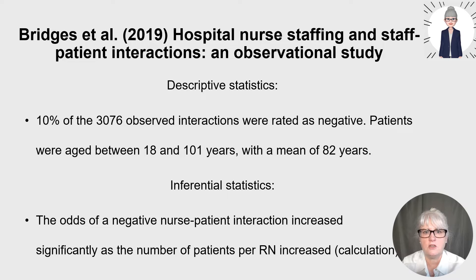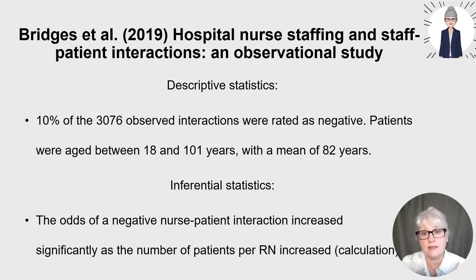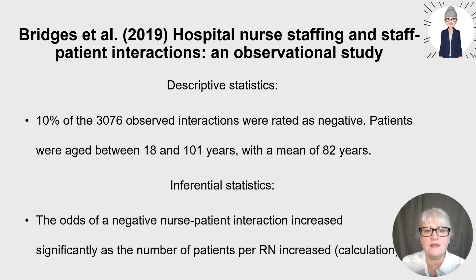An example nursing research study using both descriptive and inferential statistics is from Bridges et al. 2019, where researchers examined hospital nurse staffing and staff-patient interactions in an observational study. They used descriptive statistics to describe nurse-patient interactions — for example, 10% of the 376 observed interactions were rated as negative, and patients were aged between 18 and 101 years with a mean of 82 years. Inferential statistics were also used with a logistic regression model to investigate the impact of staffing levels on the chance of nurse-patient interactions being rated negatively — looking at the relationship between staffing levels and quality of nurse-patient interactions.